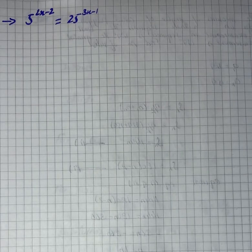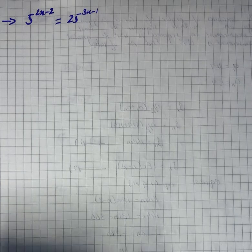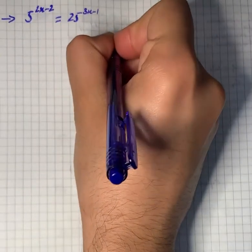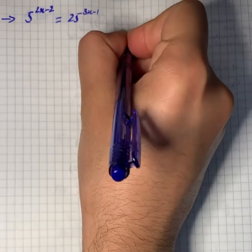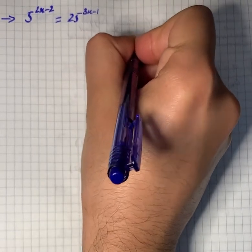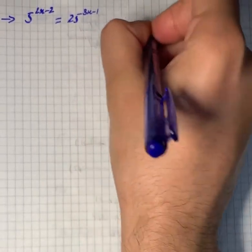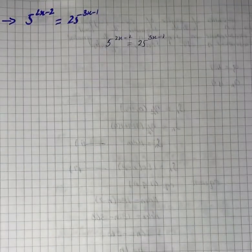We have a question where we are given 5 raised to power 2x minus 2 equals to 25 raised to power 3x minus 1.